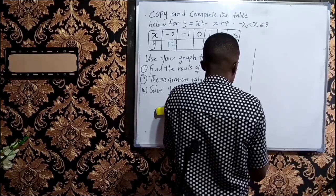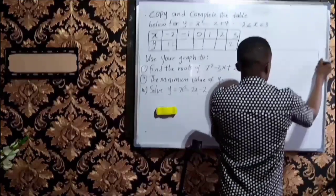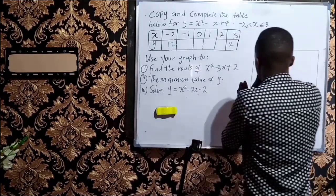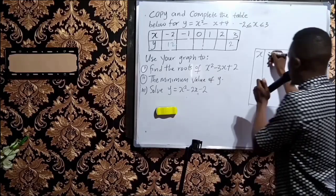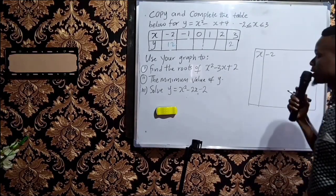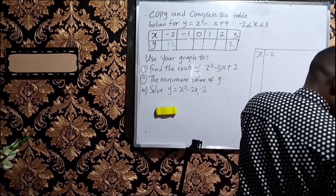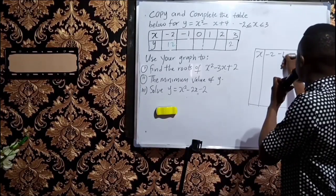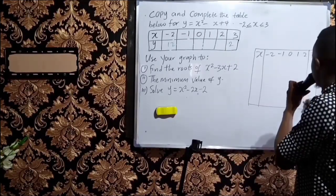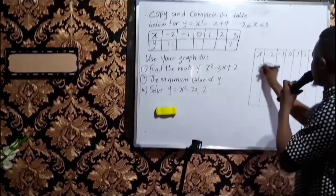You have to make a table of values like this, and that is exactly what I'm doing now. You have the values of x, and the values of x range from minus 2, minus 1, 0, 1, 2, and 3. These are the values of x that are given to us.